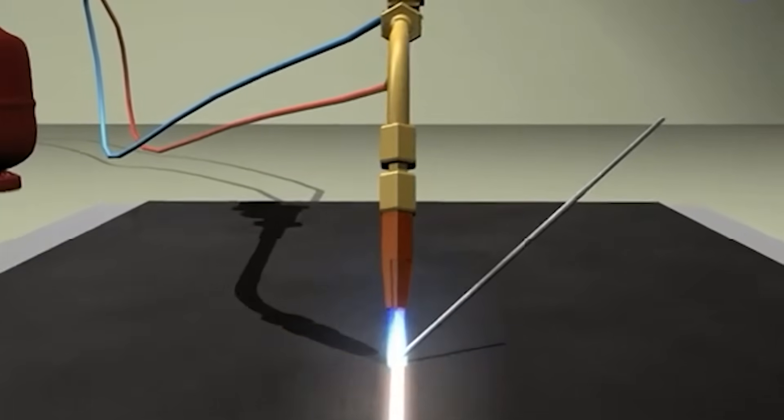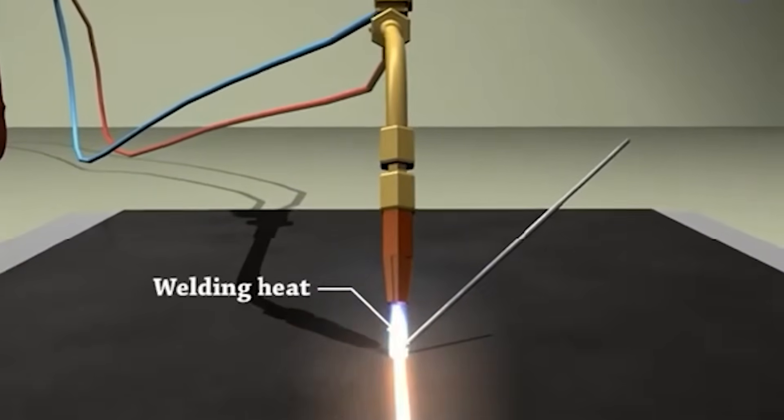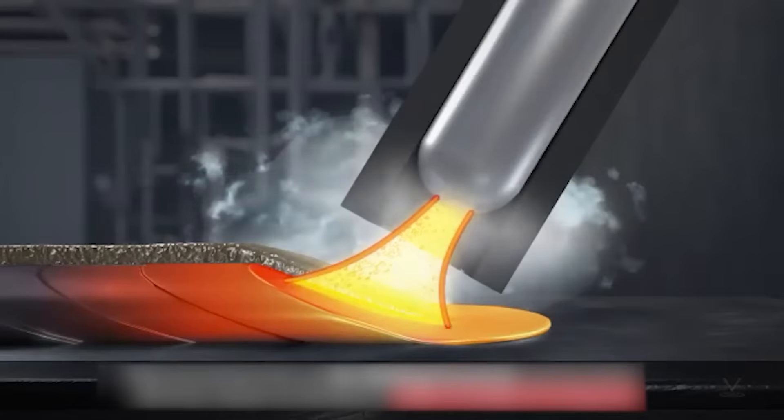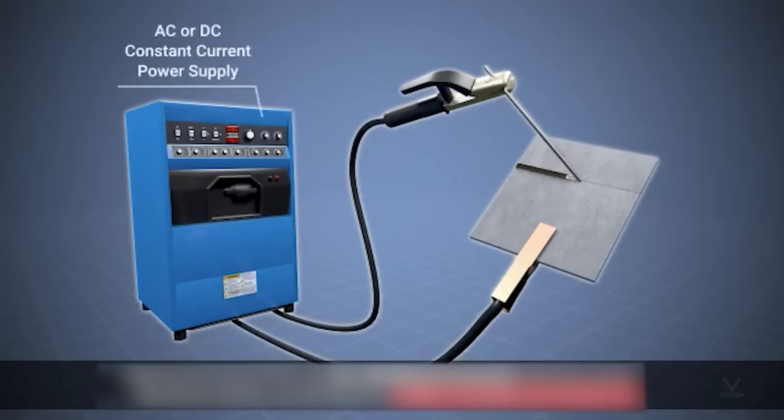All arc welding processes have three things in common: a heat source, filler metal, and shielding. The source of heat in arc welding is produced by the arcing of an electrical current between two contacts. The power source is called a welding machine, which is either electric or motor-powered.